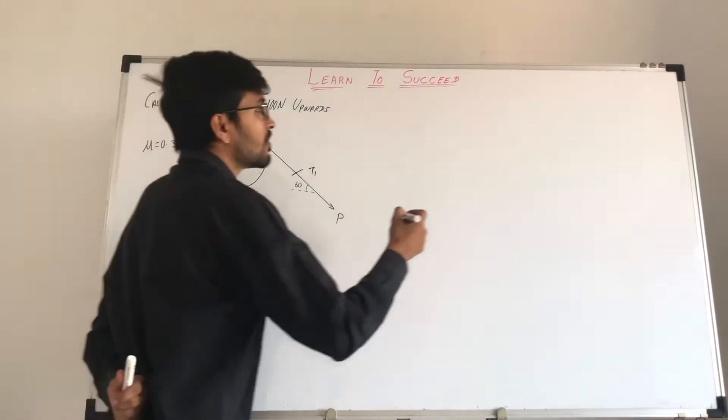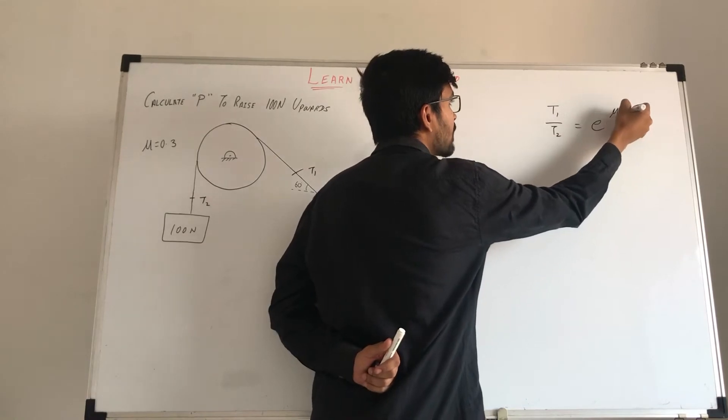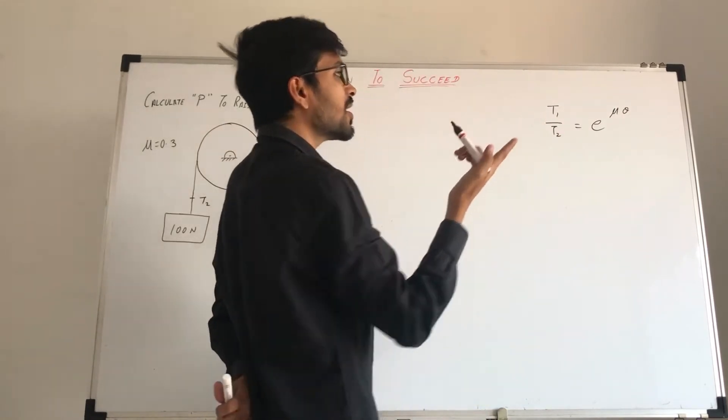Now we have the formula of belt friction. T1 by T2 equals to e raised to mu theta. We have all these values, then we will get unknown values.